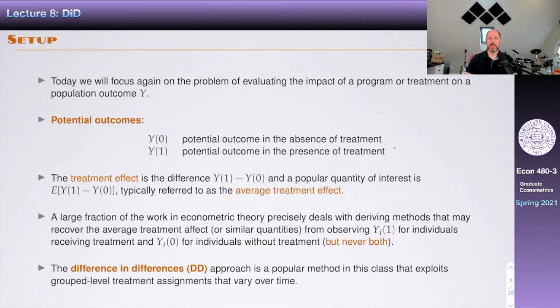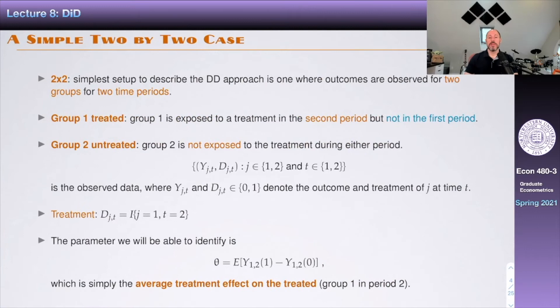The idea is that we're going to use different groups — typically cities, counties, states — that are going to be subject to a treatment. Some of them will be subject to a treatment, some will not. This is not an experiment where we decide when to assign treatment; it's just something that happens in some environment. We're going to exploit the fact that some groups are going to be subject to a treatment in some period of time and some groups are not.